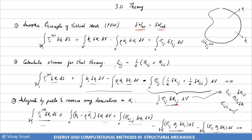We use the principle of virtual work to derive the 3D theory of elasticity. The first step was to use the principle of virtual work, where the external virtual work was shown to be equal to the internal virtual work. Using this principle, we demonstrated using calculus of variations that external virtual work equal to internal virtual work implies that all the Lagrange equations are the equations of equilibrium, which render the system in equilibrium.